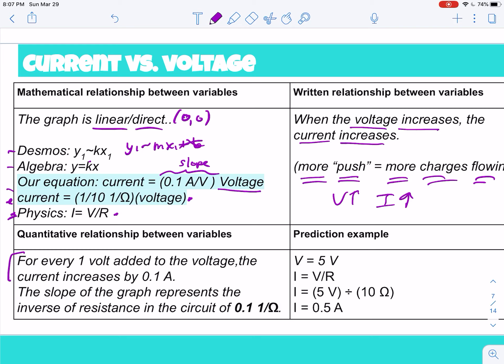All right, explaining that slope the way it's written, right, for every one volt, right? Because if it's 0.01 amps per volt, for every one volt added to the voltage, the current increases by 0.1 amps, right? The harder I push, the more charges can flow, okay? All right, so this is kind of a weird unit, but if you notice, right, 0.1, this is a little bit confusing, okay?